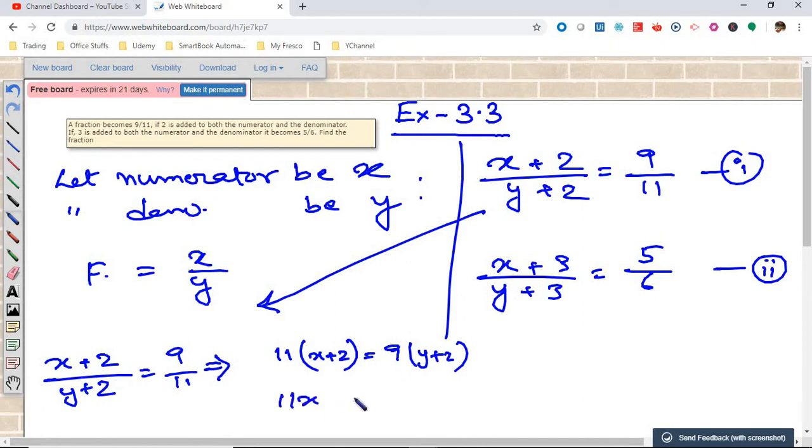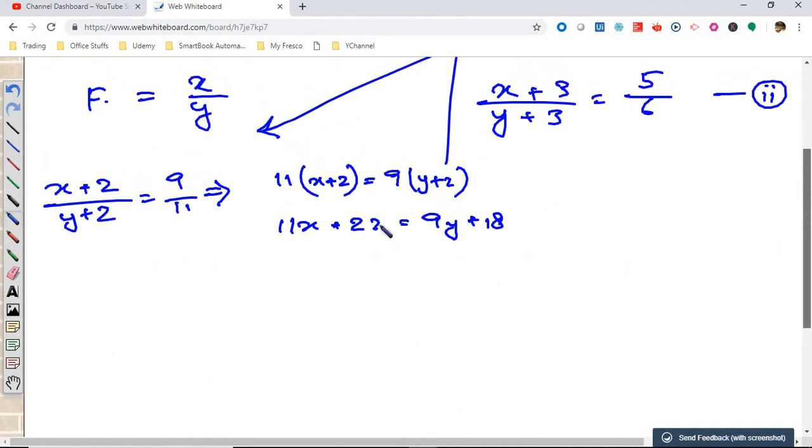This gives 11x plus 22 equals 9y plus 18. So 11x minus 9y equals minus 4. This is our third equation.